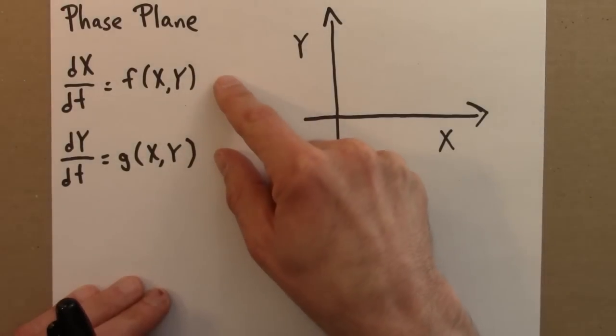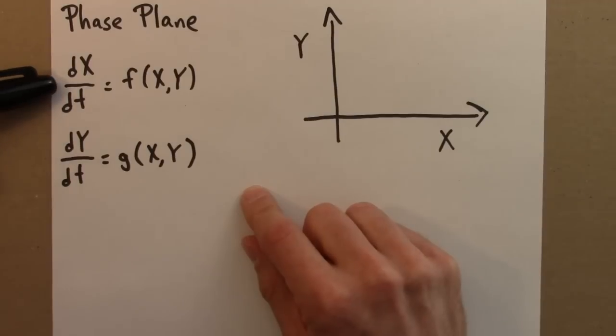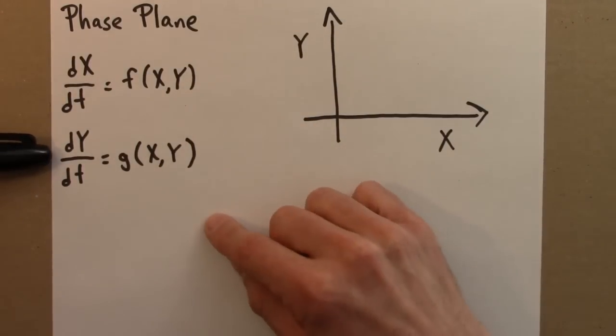So again, here are the differential equations we're working with. The rate of change of x is a function of x and y, and the rate of change of y is a function of x and y.